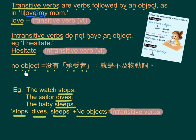动词所表示的动作不需要Object，即是说不需要有承受者。这个就是不及物动词，即 Intransitive Verbs。全部都係不及物动词。